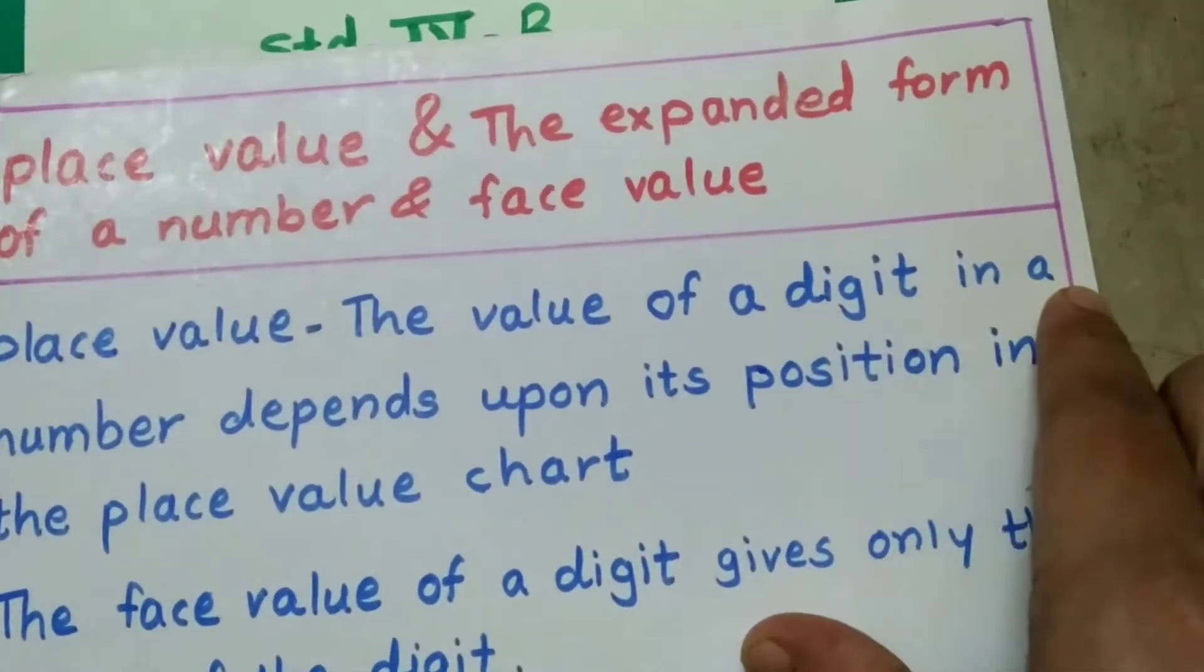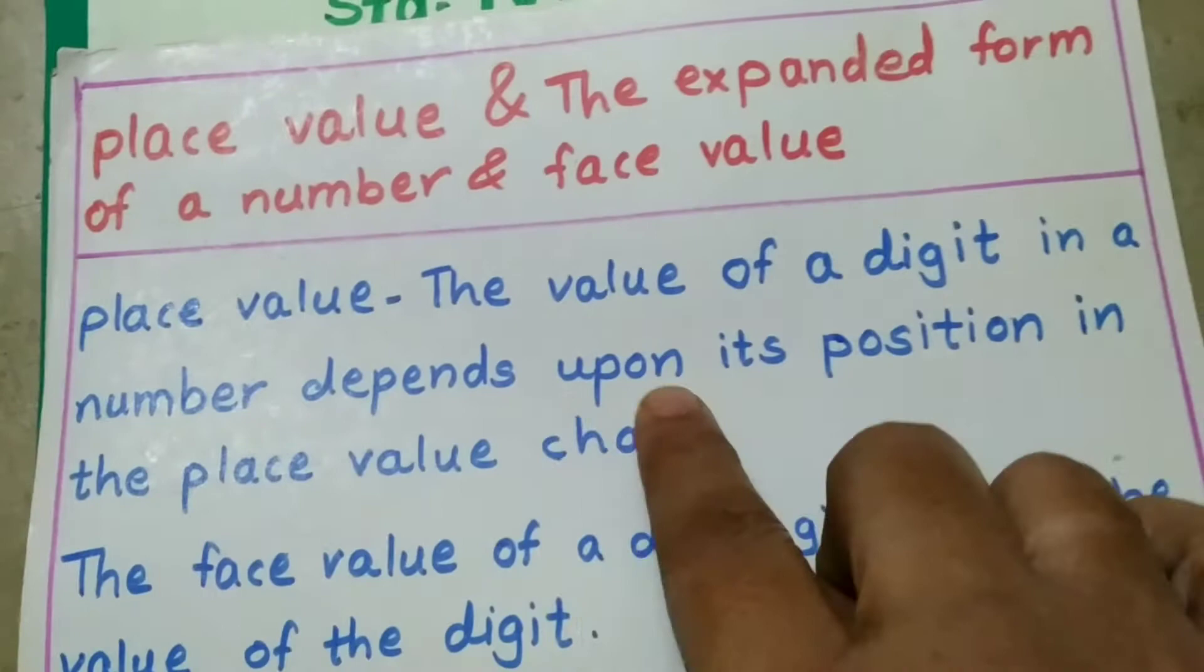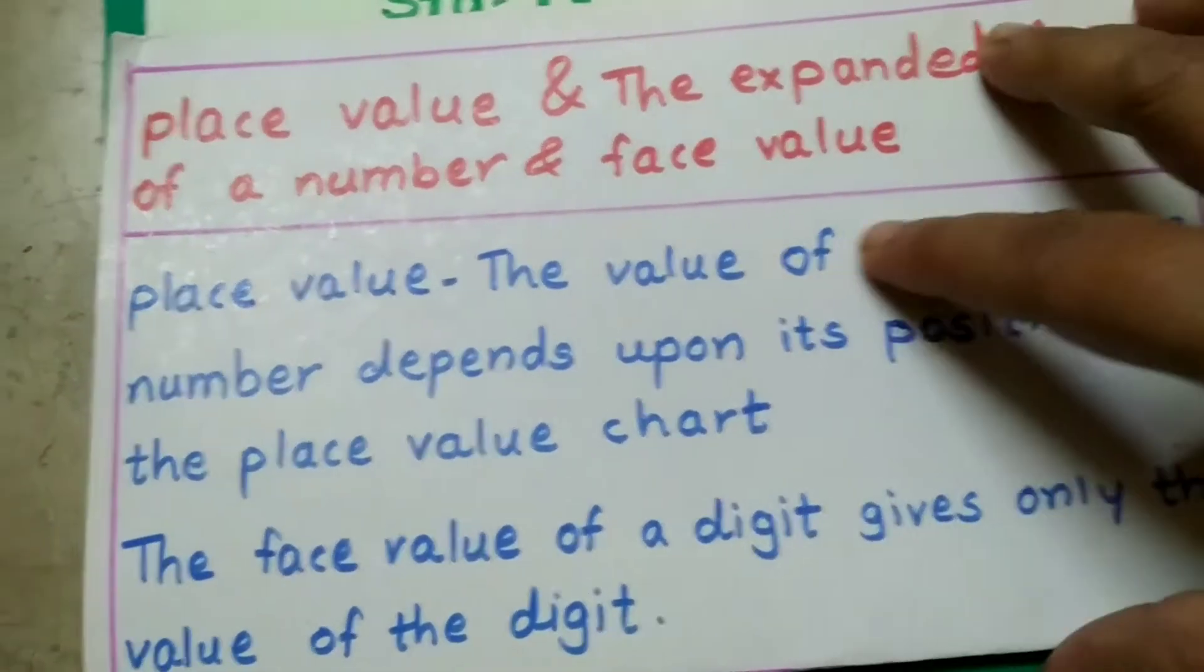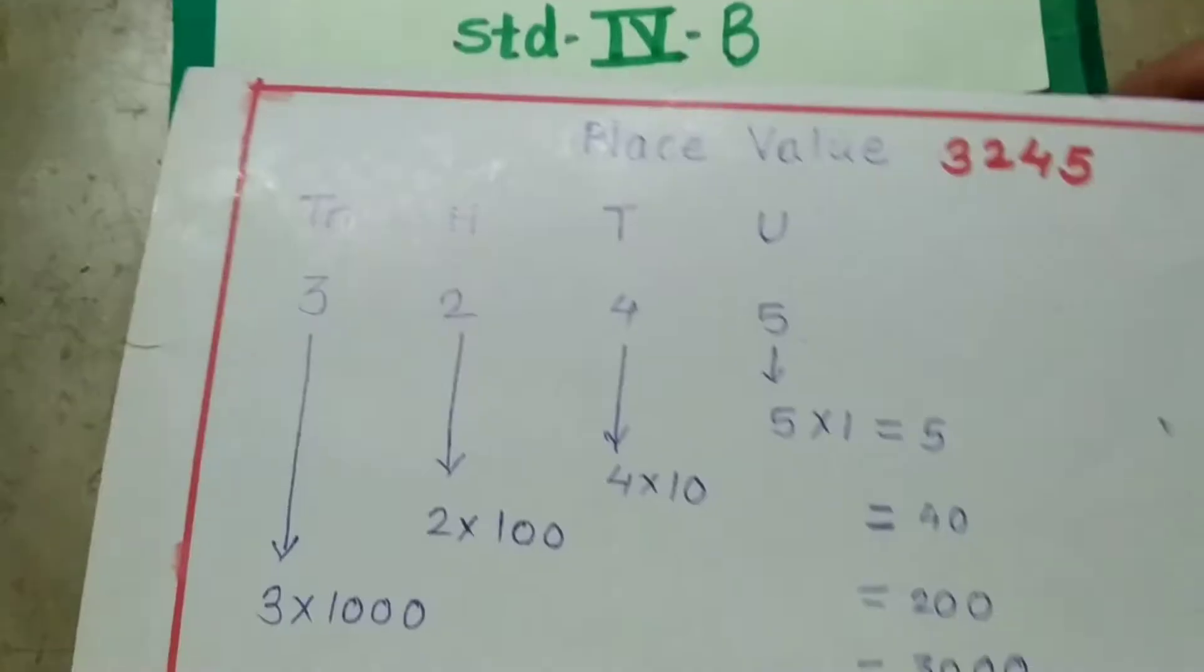The value of a digit in a number depends upon its position in the place value chart. Let's see the chart.